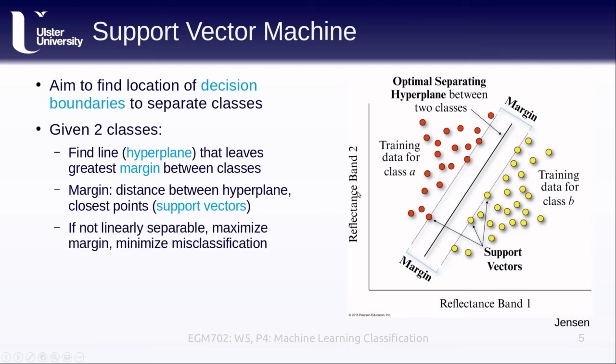If our classes are not linearly separable, that is, we might have some overlap between them, there's no nice simple way to differentiate between them, then we're trying to maximize the margin while also minimizing the misclassification.